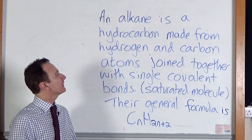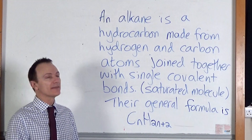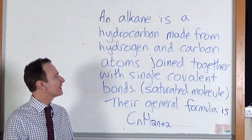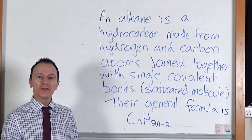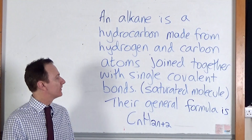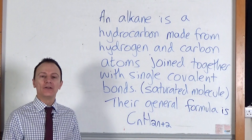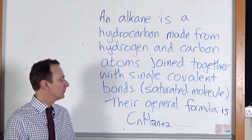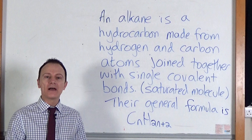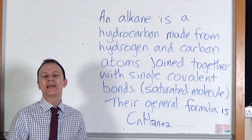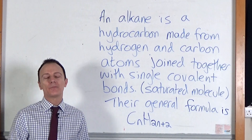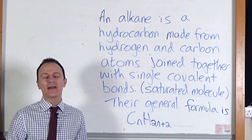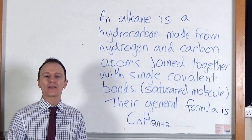To summarise, an alkane is a hydrocarbon made from hydrogen and carbon atoms joined together with single covalent bonds. In other words, they're saturated molecules and they've got a general formula of CnH2n+2. If you found the video useful, please give it a like. Thanks for watching.